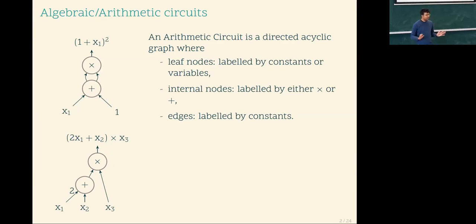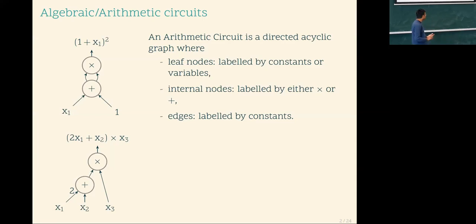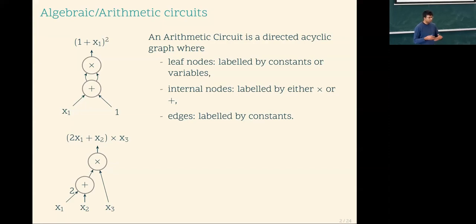These are directed acyclic graphs where the leaves are labeled either by variables or constants, and every non-leaf node is labeled by a multiplication or an addition. You can choose to pass constants along the edges as well. Every node computes a polynomial operation on its inputs, and then you compute a polynomial at the end. You can think of this as symbolic generation of polynomials.